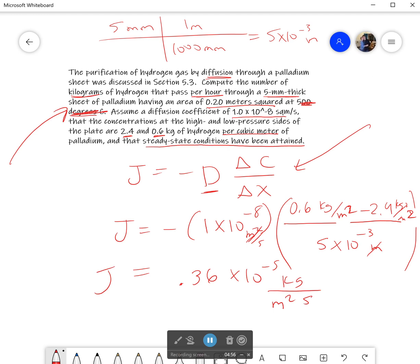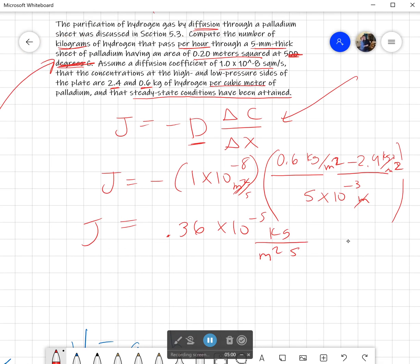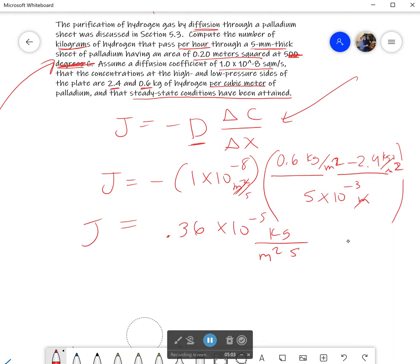Now, what did it ask for? It didn't ask for this. It asked for the number of kilograms that go through per hour. So, the big thing that you have to remember here, and the thing that's maybe difficult to figure out, is that the mass that has passed through your surface is going to be equal to my flux times my area times the time.